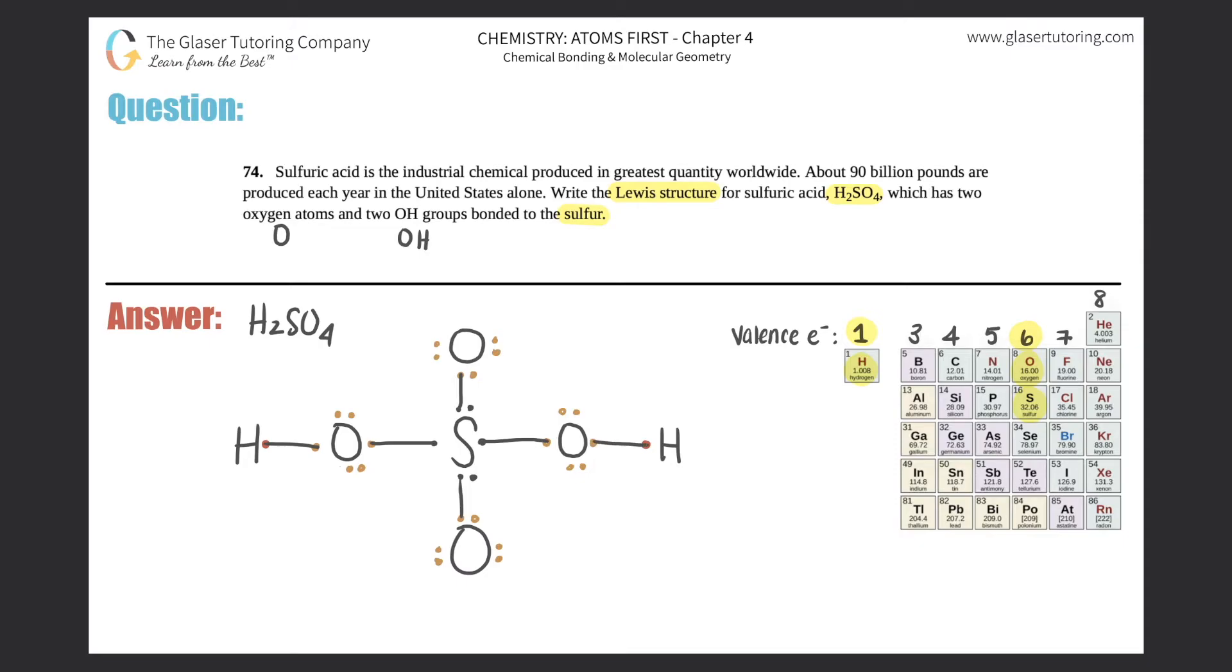And now we check the outer elements to see if they have the octet. Remember, the octet rule means that majority of them want to have eight electrons when they're done bonding. However, the exception is that hydrogen, in this case, only wants to have two electrons, which it does. This hydrogen now has a single bond, which represents that it has two electrons. So this is good. That means I will not change this single bond. And the same thing goes with this hydrogen. It has a single bond. So this hydrogen is good.